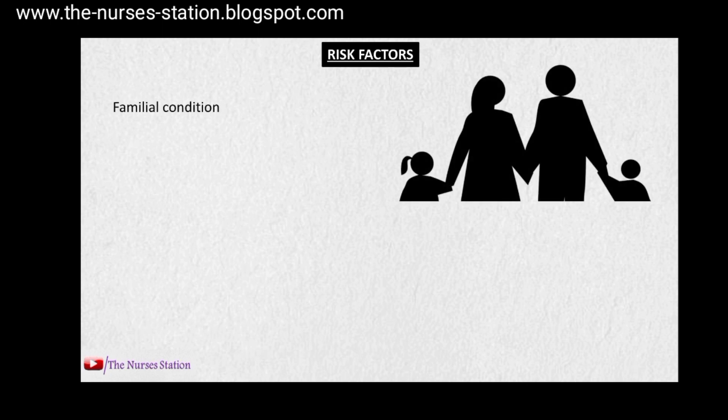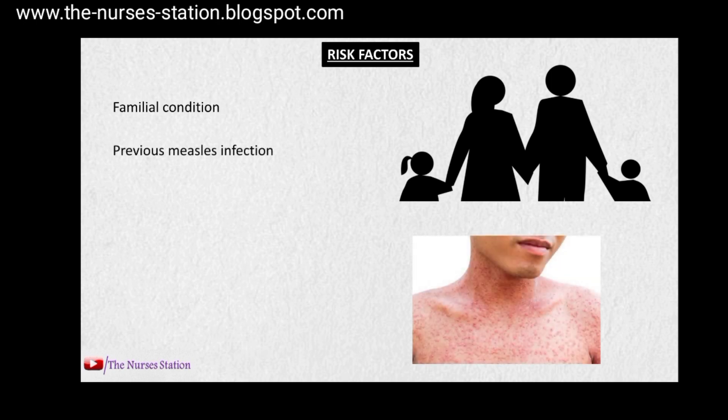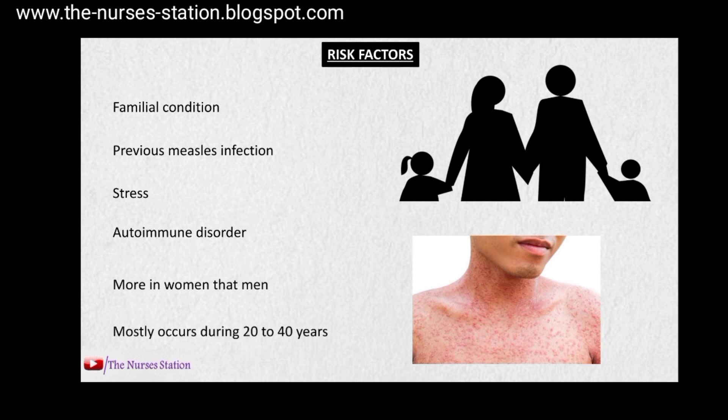The risk factors for otosclerosis include a familial condition — a person having a family history of otosclerosis is at increased risk of getting this disorder — previous measles infection, stress, and autoimmune disorders. Otosclerosis is found more in women than in men and it occurs mostly during the 20 to 40 years of age.